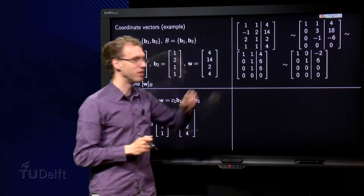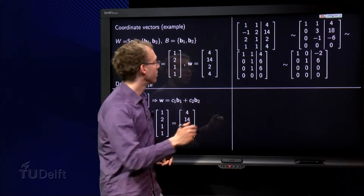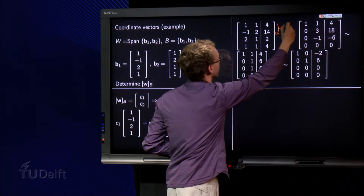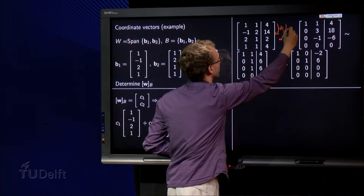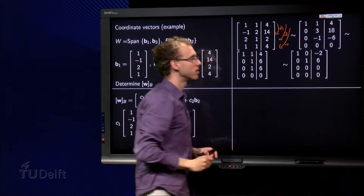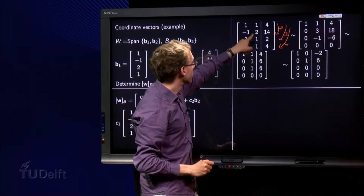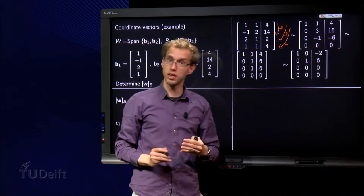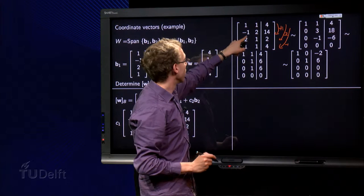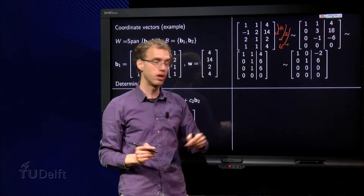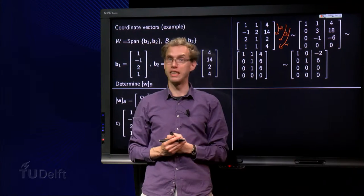We form the augmented matrix and we do some row reduction. Add it once over here, subtract twice, subtract once. Then we get 0, 3, 18—that's a new second row. 0, minus 1, minus 6—that's a new third row. And the fourth row vanishes entirely.